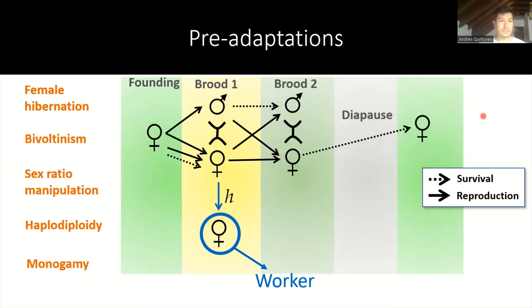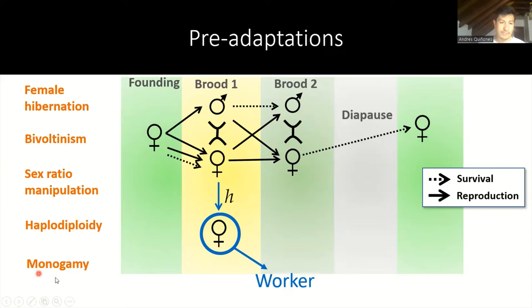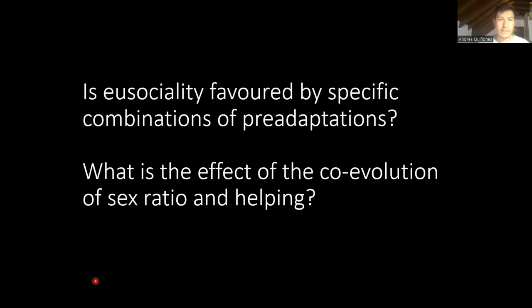I'd like to stress these key traits: female hibernation, the bivoltine life cycle where two broods are produced in a single reproductive season, sex ratio manipulations where females can produce different sex ratios in the two broods, haplodiploidy as the sex determination system, and monogamy. I want to answer questions about the evolution of eusociality using an evolutionary model in the context of this solitary life cycle. The questions I want to address are: is eusociality favored by a specific combination of pre-adaptations, and what is the effect of the co-evolution of sex ratio on helping?